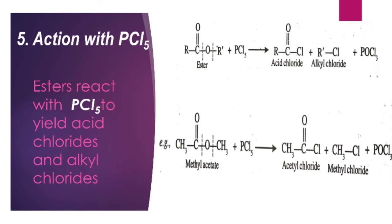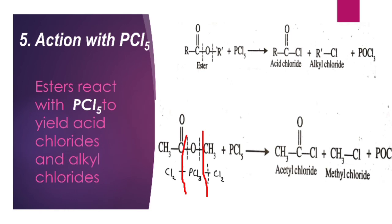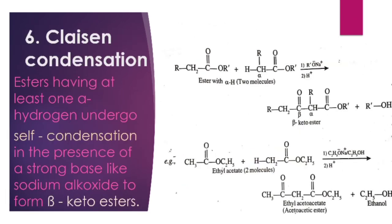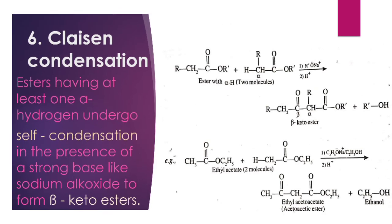The fifth reaction is action with PCl5. Esters react with PCl5 to yield acid chlorides and alkyl chlorides. When methyl acetate reacts with PCl5, we get acetyl chloride and methyl chloride. We can easily write the product by considering the splitting of PCl5, though this is not the actual mechanism.